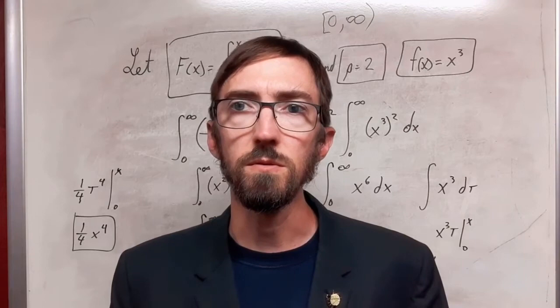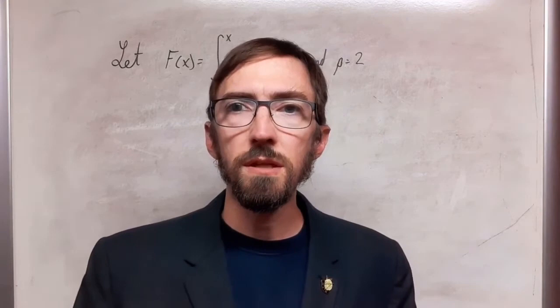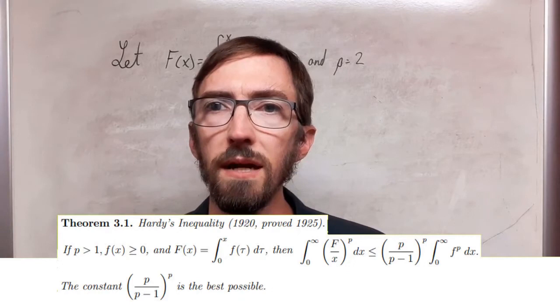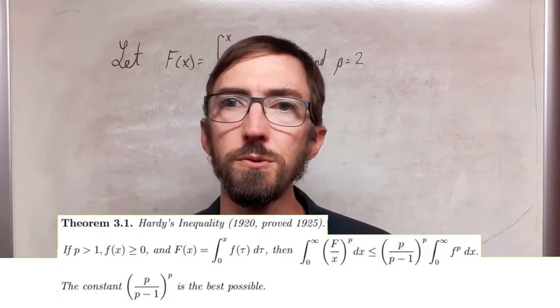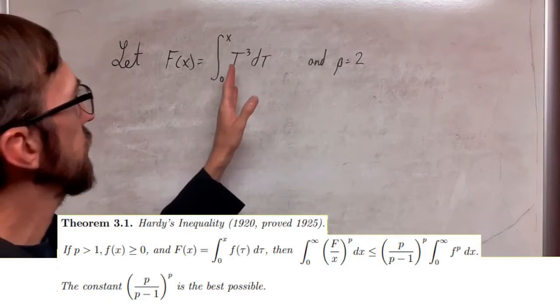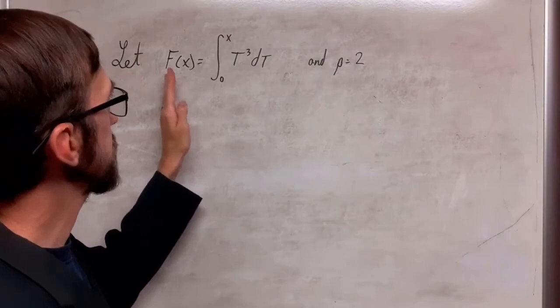I want to take a look at a solid example using Hardy's inequality theorem. We have to choose a function and we need to choose a p value. So for the function I'm going to make my function of t to be t cubed.